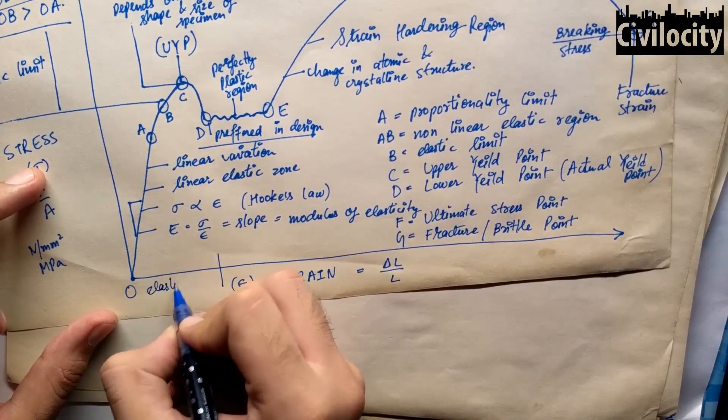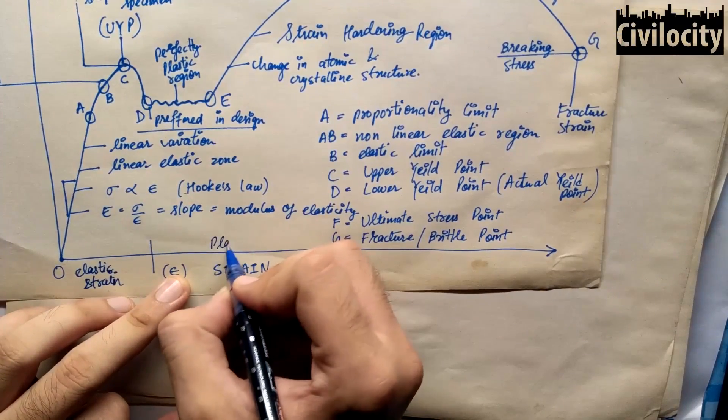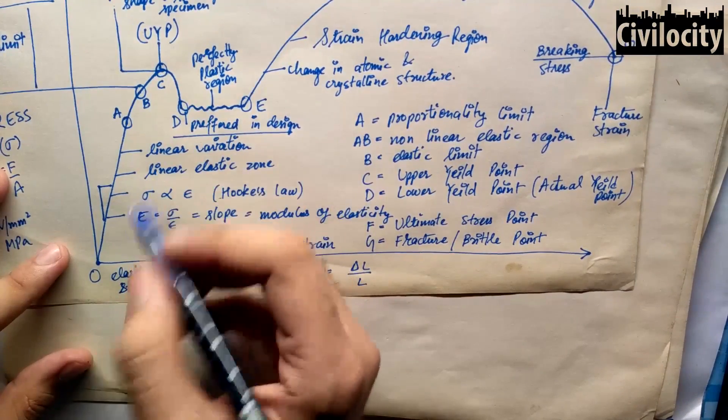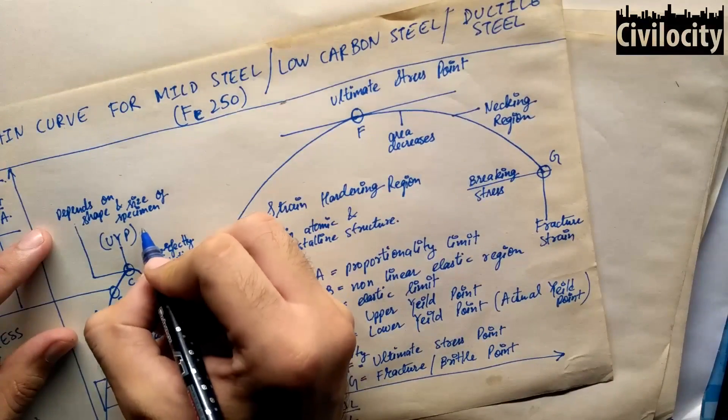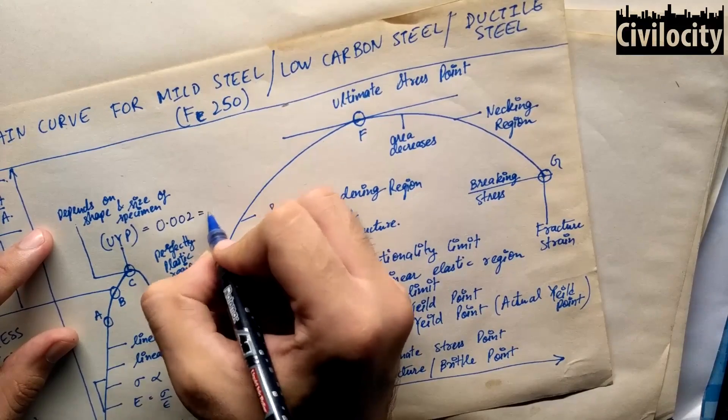From O to D the strain is called elastic strain and from D to G the strain is called plastic strain. The upper yield point, point C, is normally found at 0.2% of strain, that is at a value of 0.002.